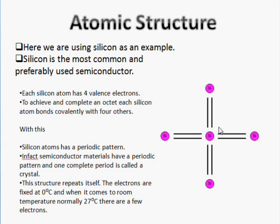This periodic pattern continues throughout the material except at the ends. This repeating structure is what is known as a crystal of silicon.